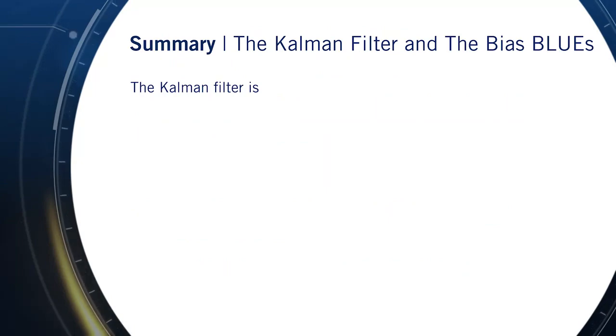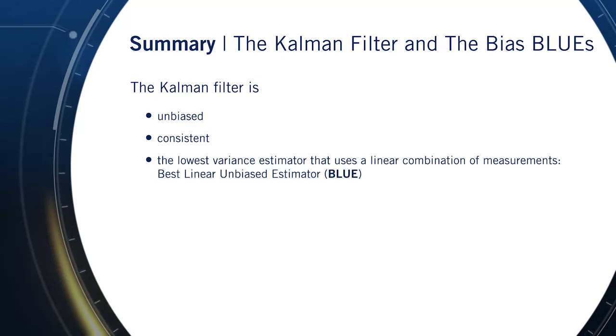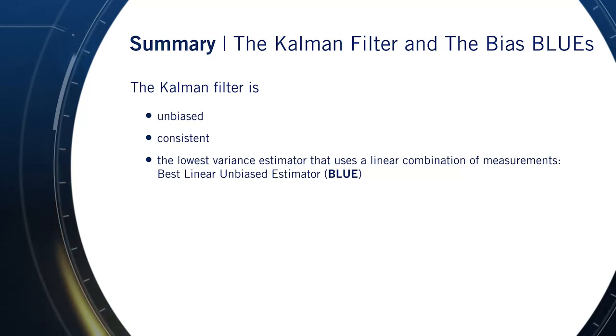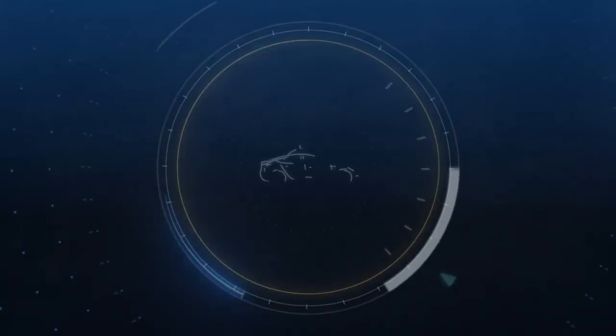To summarize, in this lesson we've defined the terms bias and consistency and shown that the Kalman filter is unbiased, consistent, and the best linear unbiased estimator, or BLUE. Remember that "best" here refers to the fact that the Kalman filter minimizes the state variance. Although this is a fantastic result, most real systems are not linear. For self-driving cars, we'll generally need to estimate nonlinear quantities like vehicle poses, position, and orientation in 2D and 3D. To do this, we'll need to extend the linear Kalman filter into the nonlinear domain, which we'll cover in the next lesson.